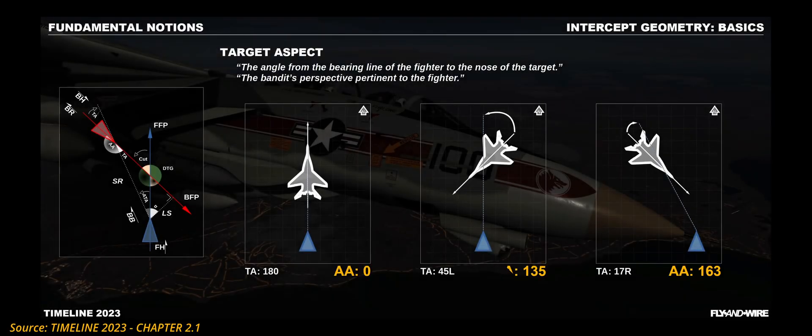The target aspect is one of the most important angles. There are several definitions for it, but simply put, it is how the bandit appears when looked at from the perspective of the fighter. It is unfortunately also an angle that instantaneously solely depends on the bandit. If the bandit maneuvers, we cannot do anything about it. The only thing we can do is try to adjust our geometry and hopefully over time we can affect the target aspect.